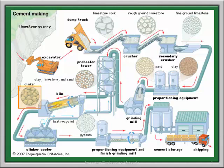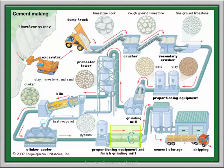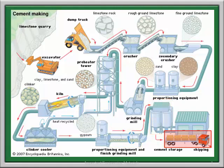These are the clinkers of cement which are produced. The clinkers are very hot, therefore they are subjected to cooling in a clinker cooler. Then this is the proportionating equipment, where the respective quantity of gypsum is added. Then it is subjected to cement storage and finally shipping.